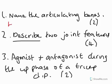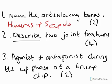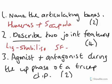The articulating bones of the shoulder are the humerus and scapula — make sure you've got those straight away. For two joint features, you could say ligament — and that is to stabilize — which would get you two marks, one for ligament and one for stabilize. You might have said synovial fluid, and to lubricate. You could have also said hyaline cartilage to shock absorb, or synovial membrane to admit synovial fluid, and so on.